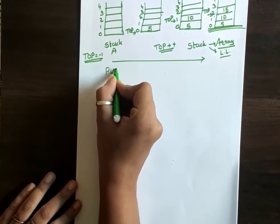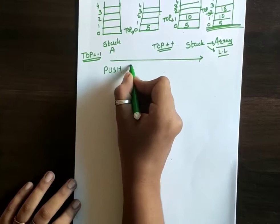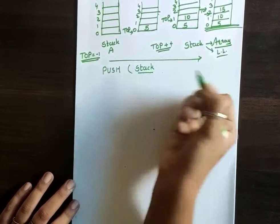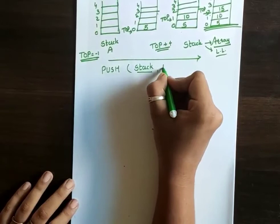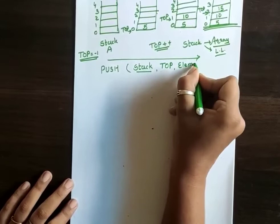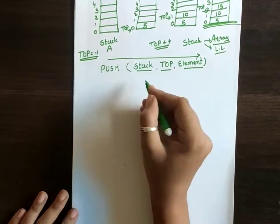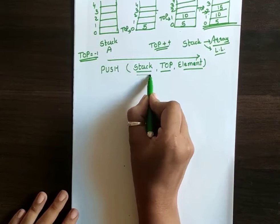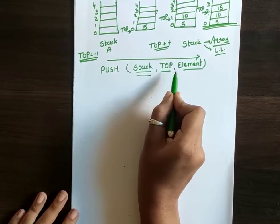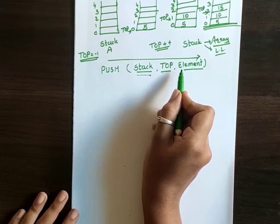For the algorithm push, it can have: first the stack — the name of my array; then the topmost value; and then the element that I need to insert. So these three things I need to pass into my function. First that is an array, which I named as stack; the second thing is the topmost element; and the third one is the element that I want to push into my stack.